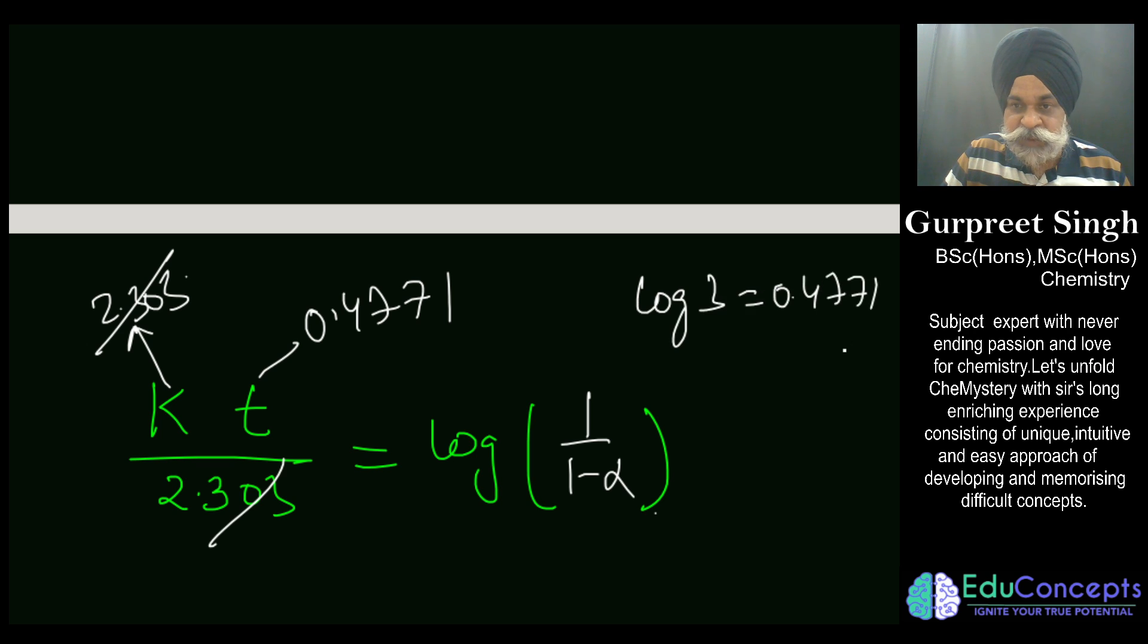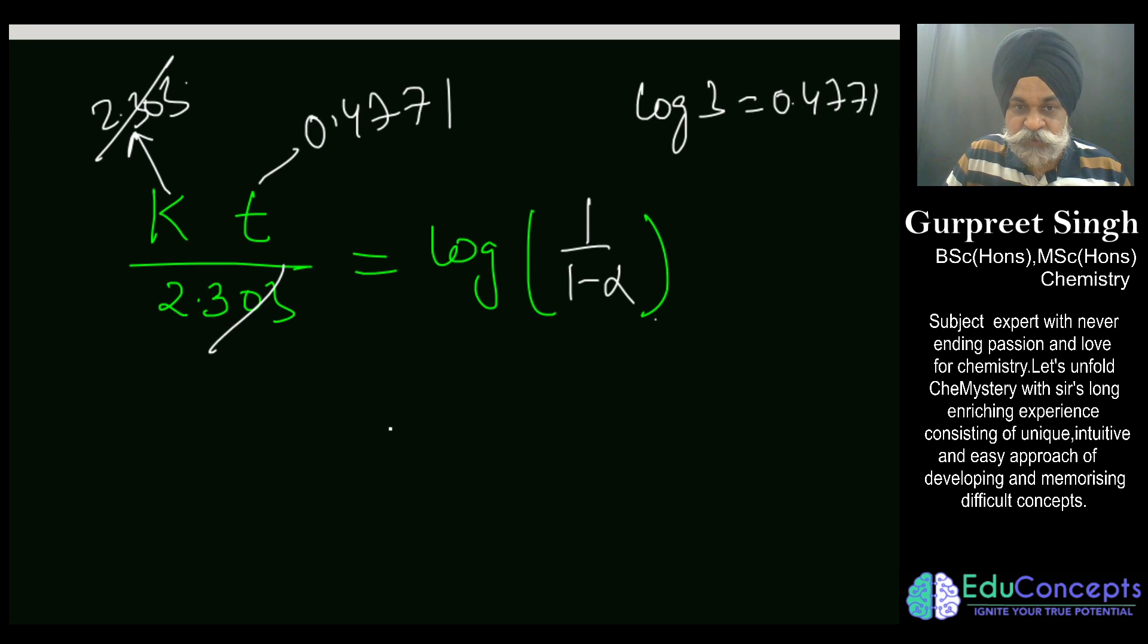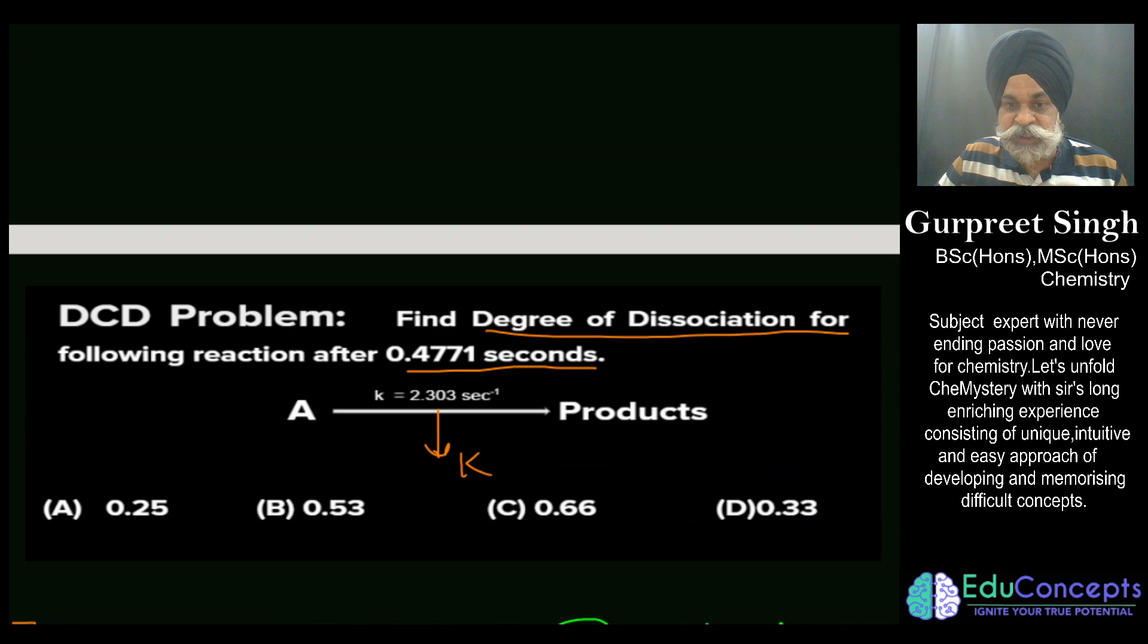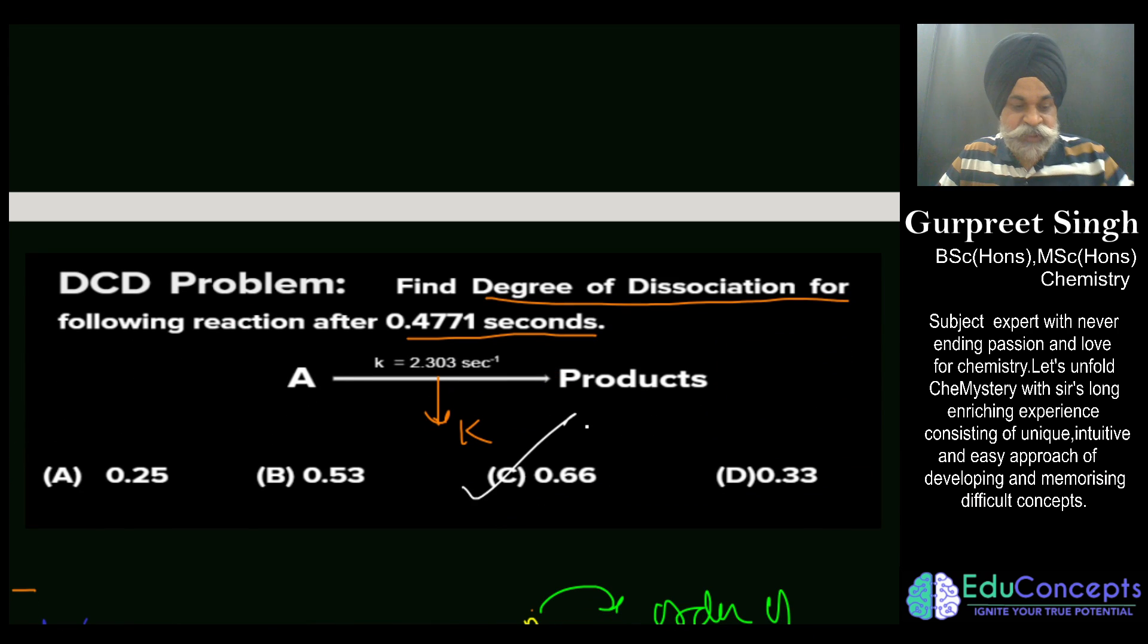So we got the answer: what is 3 is equal to 1 upon 1 minus alpha, so the alpha is 2 by 3, that is 0.66. So we are through the question, the answer to this question is 0.66. Thanks a lot, have a nice day, hope you enjoyed today's session, bye bye.